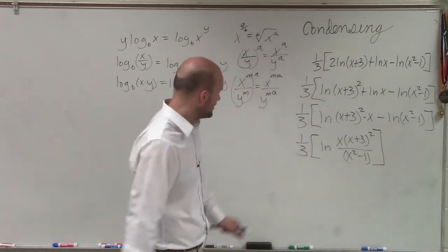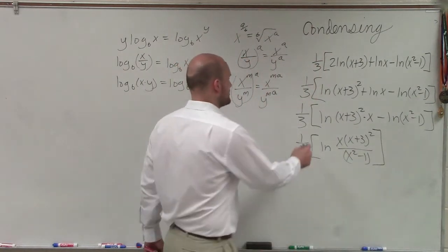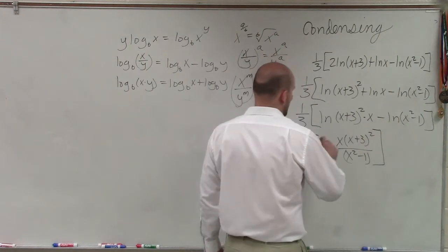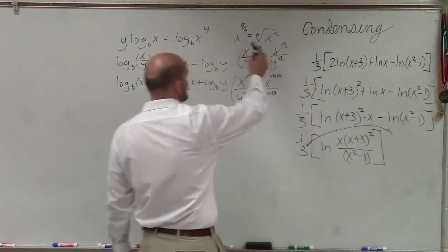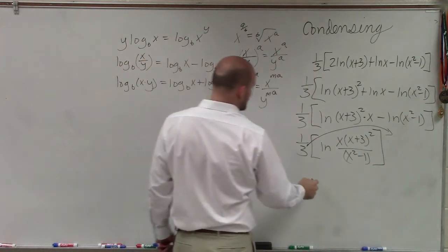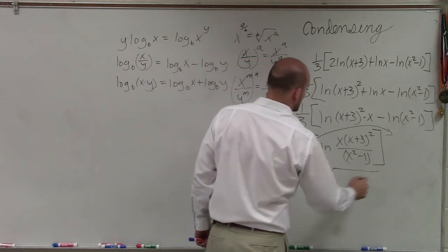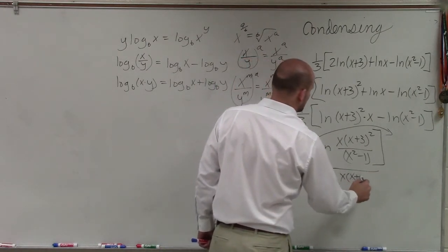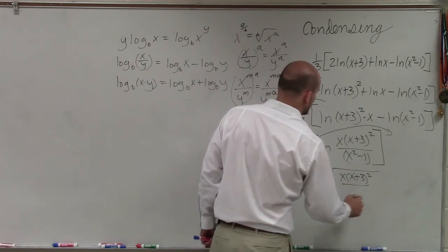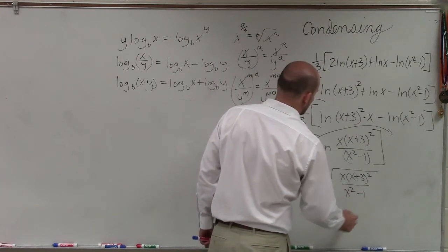All right. So now I go ahead and take a look. I have my 1/3. Now remember, I can rewrite this up top. But remember, 1/3 as a rational exponent is the same thing as the third root. So therefore, my final answer is ln of the cube root of [x(x+3)²] divided by (x²-1).